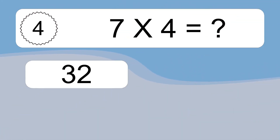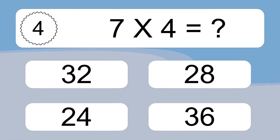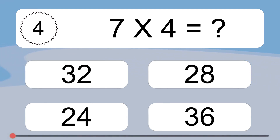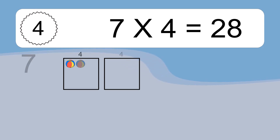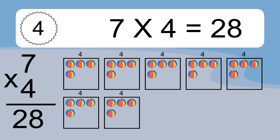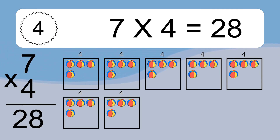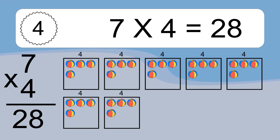7 times 4 equals what? We have 7 boxes, and each box has 4 colorful balls inside. If you count all the balls in all the boxes together, you will have 7 times 4 balls. This equals 28 balls.